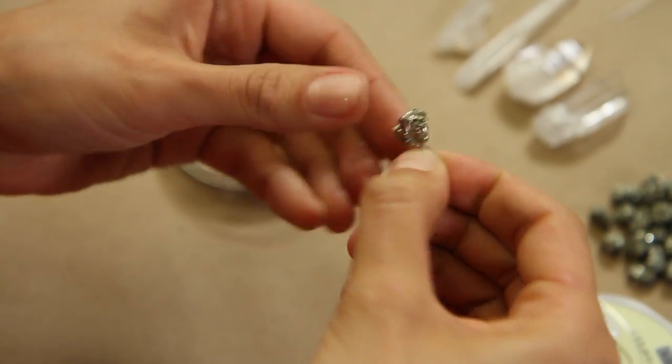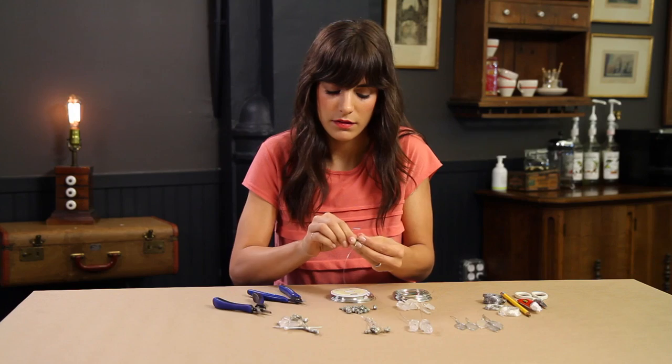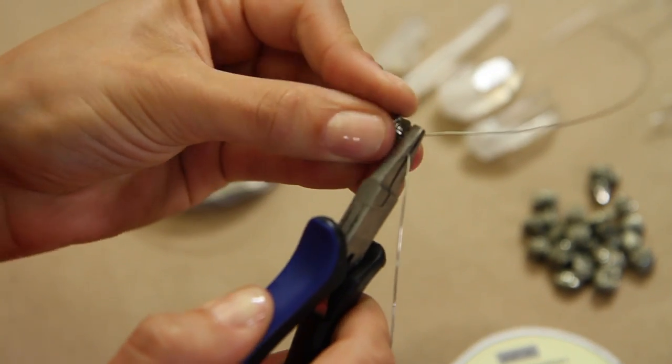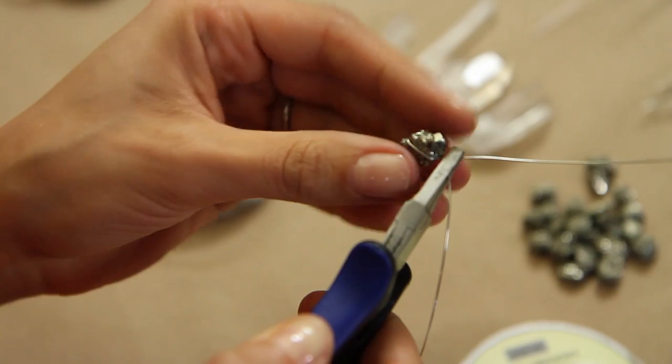And I'm going to loop it around, press it down at the bottom and make sure it's going to be secure there. And then with flat nose pliers, I'm going to really secure it by just twisting the pyrite enough so that that loop is really secure around it.